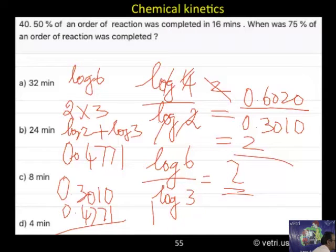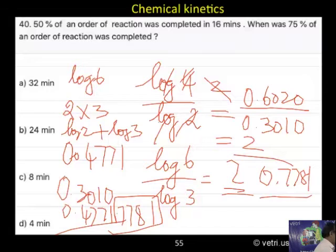You add this, 1, 8, 7, 7. So, it is the answer of 0.7781. So, now what I have to do now, 0.7781 divided by 0.4771. Anybody having calculator, please do this. Kindly divide it and tell me the answer.